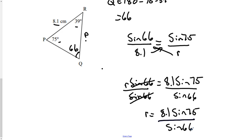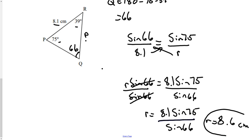Get your calculator out and try this one — make sure you can do all the steps. Most people find it's not so much setting the equation up; it's punching it into the calculator, because if you do it in the wrong order you'll get it wrong. Doing 75 sine times 8.1 equals, then divided by sine 66, I get 8.6 centimeters.